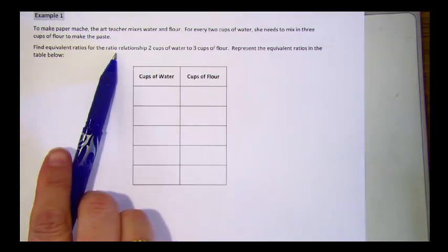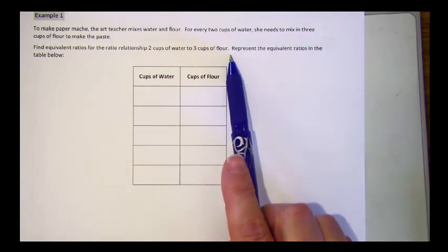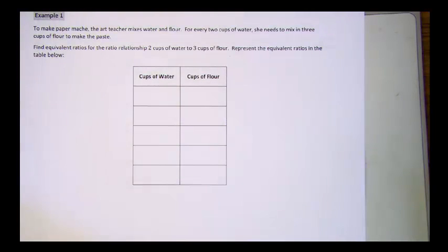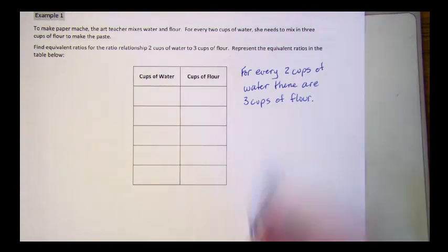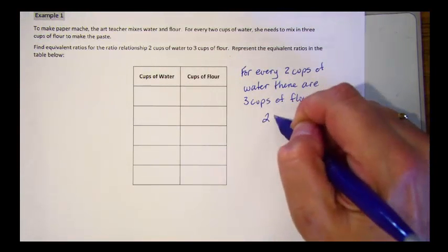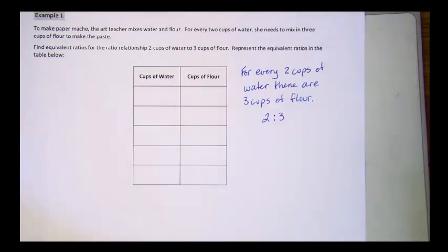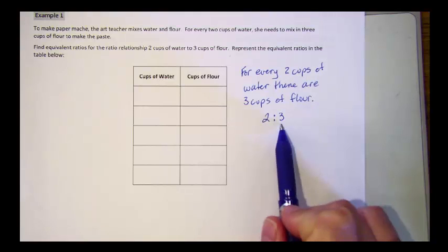We've got this ratio relationship: two cups of water to three cups of flour. What does this ratio mean? For every two cups of water, there are three cups of flour. That means the ratio of two to three. It means every time we have a set of two cups of water, then we need three cups of flour.